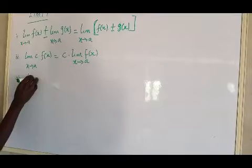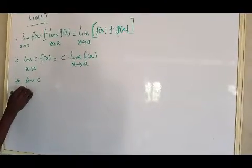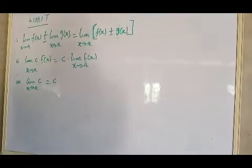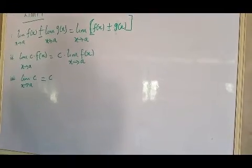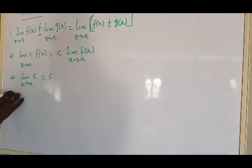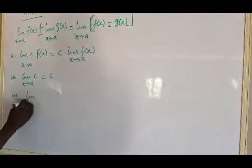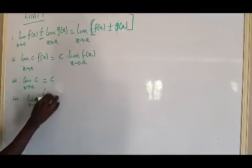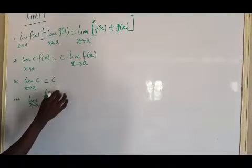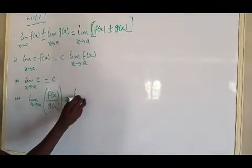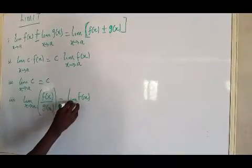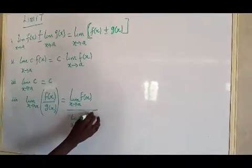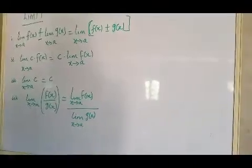The third theorem is that the limit of a constant as x tends to a will give you that constant without any change. The same thing applies to division: the limit of f(x) over g(x) as x tends to a is the same as the limit of f(x) as x tends to a, divided by the limit of g(x) as x tends to a.